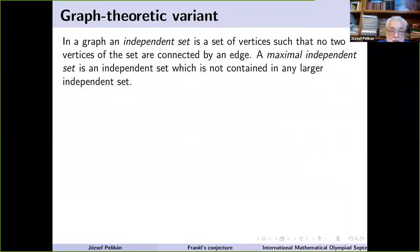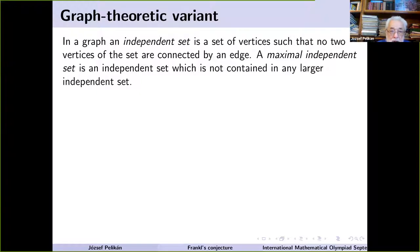Another good approach when you're hopeless after many efforts trying to prove or disprove something: sometimes it's a good idea to formulate an equivalent problem in a quite different setting which is easier to attack. Indeed, Frankl's conjecture has many equivalent variants. I'll show you one of those — the graph-theoretic variant. Again we start with a few definitions. In a simple graph without loops or multiple edges, an independent set is a set of vertices such that no two vertices in the set are connected by an edge.